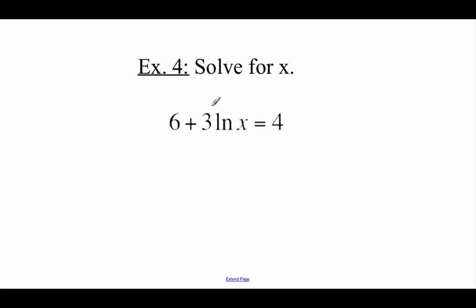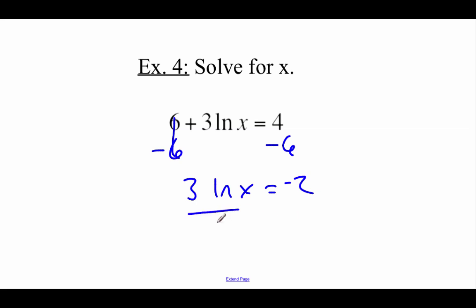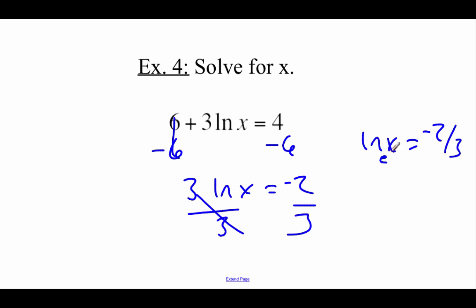Doing similar things to this next one, again trying to get this x all by itself, so maybe we subtract the 6 over to the right-hand side, so we get 3 times the natural log of x equals negative 2. Divide both sides by 3, so we get the natural log of x equals negative two-thirds, and then again I'm going to rewrite this as an exponential. Natural logs are base e, so it goes e to the negative two-thirds power equals x, and then again we could type this one into our calculator if we wanted to.